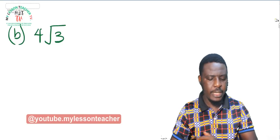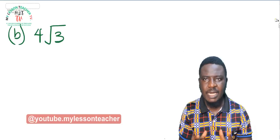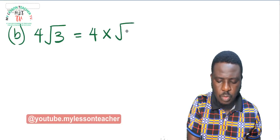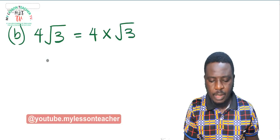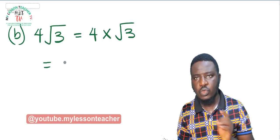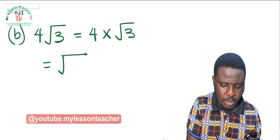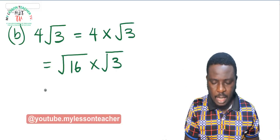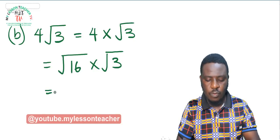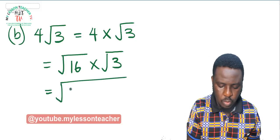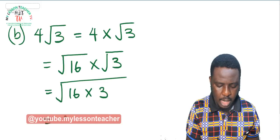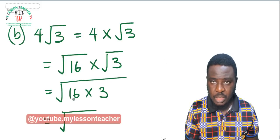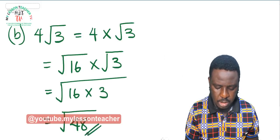Example B: 4 root 3. We do the same thing, rewriting this as 4 times root 3. Ask yourself: square root of what gives you 4? The square root of 16. So root 16 equals 4, meaning this can be expressed as root 16 times root 3. Applying the laws of surds, this becomes root of 16 times 3, which equals root 48. That is our answer.